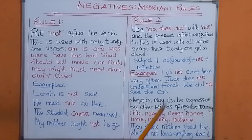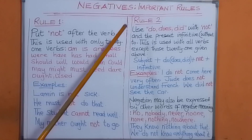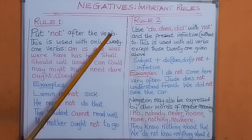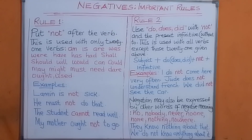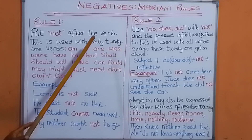Important rules. We are looking at negatives — important rules. We are going to look at just two or three rules here. Now rule number one: how to make negative sentences, or make negative comments, or make negative statements in English language. Rule number one: put 'not' after the verb. That is the first rule.